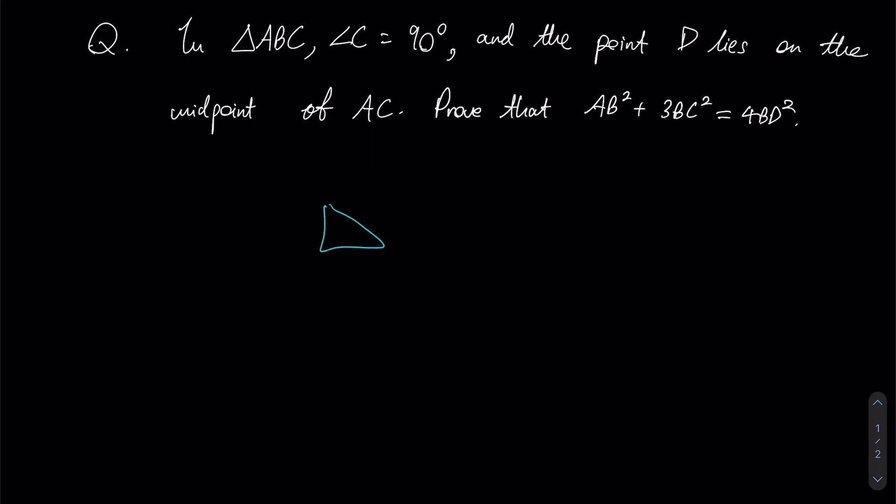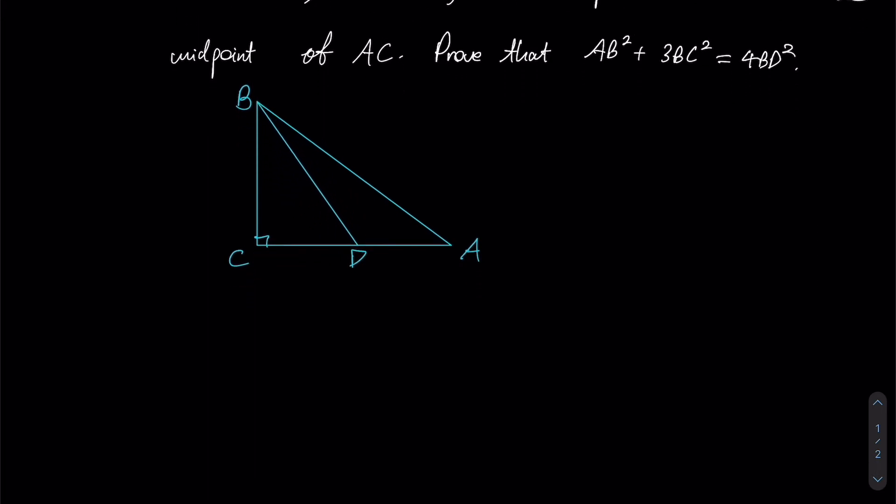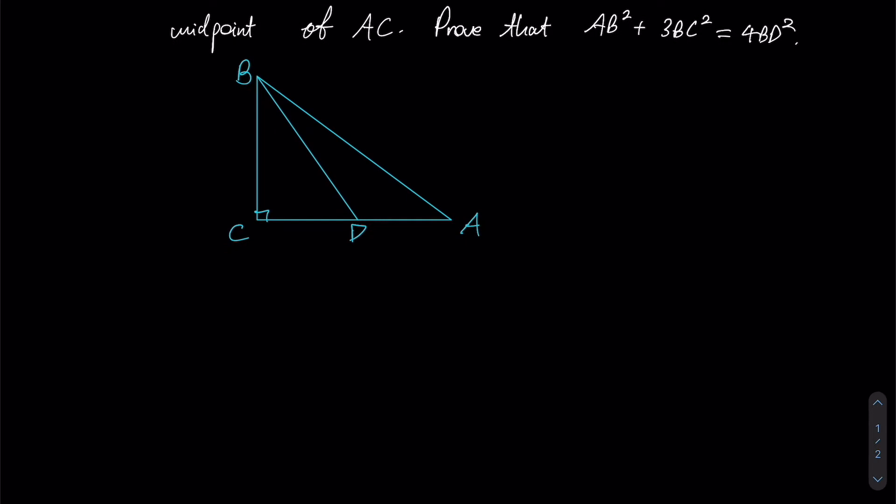Let us try to draw a right-angle triangle for ourselves first. Let this be C, let this be A, and let this be B. So here is our right angle, and point D lies on the midpoint of AC, which would be somewhere over here. Let us draw a line from B to D. Our figure is now complete. Let us try to start proving this relationship.